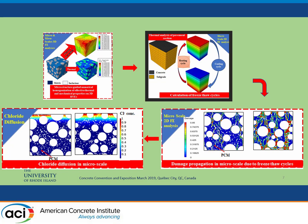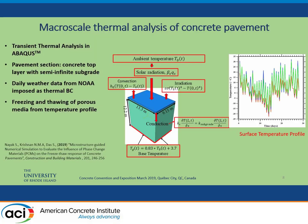Now for the macroscale thermal analysis of the real pavement section: I show a pavement section consisting of concrete on a semi-infinite subgrade, incorporating all modes of heat transfer — conduction, convection, radiation, and conduction between the top concrete layer and the bottom subgrade. It is a transient thermal analysis performed with Abaqus, incorporating the latent heat effect of PCMs. Daily weather data is taken from the NOAA website and imposed as a thermal boundary condition, where T0T is the daily weather temperature, yielding freezing and thawing profiles of the porous media.